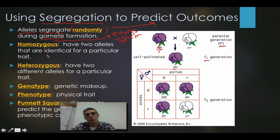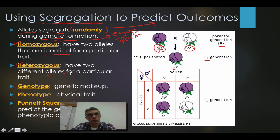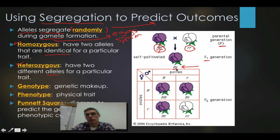Some terms we're going to look at as we work with Punnett squares are homozygous and heterozygous. Homozygous basically means having two alleles that are identical for a particular trait. In this case, the two capital R's would be considered a homozygous situation — the prefix H-O-M-O refers to same. The two lowercase r's would also be considered homozygous. If it's a heterozygous state, then we have two different alleles for a particular trait — a capital R and a lowercase r. Hetero means different.